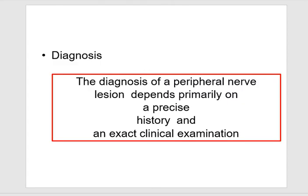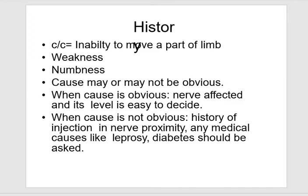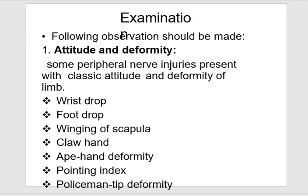Diagnosis of a peripheral nerve injury depends primarily on precise history and exact clinical examination. Clinical features include: inability to move a part of a limb, weakness, numbness, and the cause may or may not be obvious. When the cause is obvious, the nerve affected and its level are easy to decide. When the cause is not obvious, history of injection in the nerve proximity, or any medical causes like leprosy or diabetes should be inquired into.